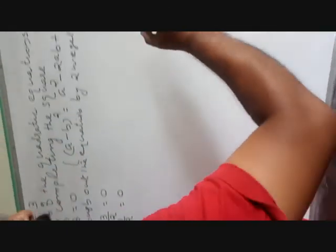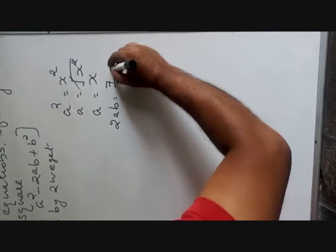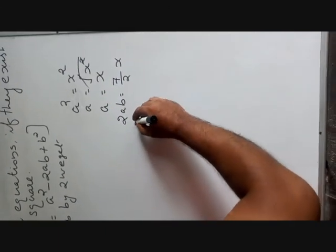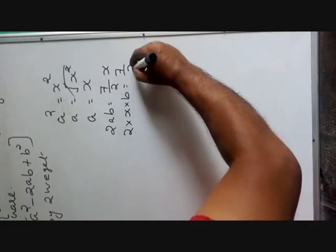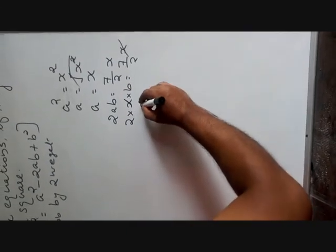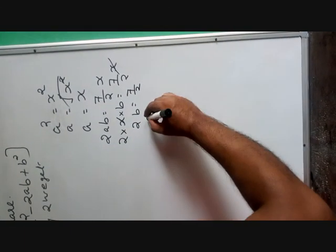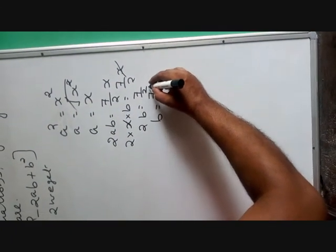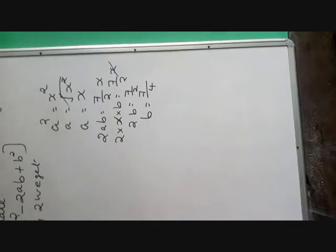The middle term is 7 by 2 times x, that is 2ab. So 2ab equals 7 by 2 times x. Substituting a equals x, we get 2 times x times b equals 7 by 2 times x. The x cancels, giving 2b equals 7 by 2. Therefore b equals 7 divided by 4, that is 7 by 4.